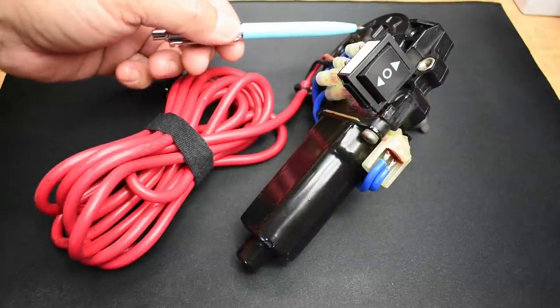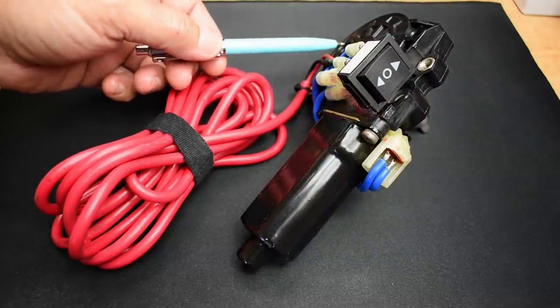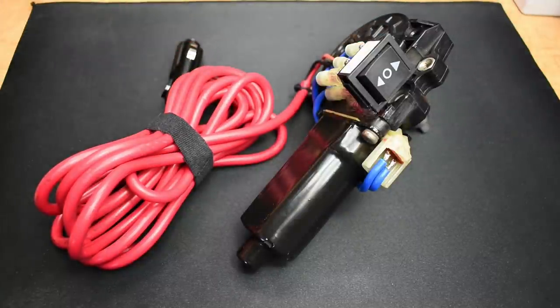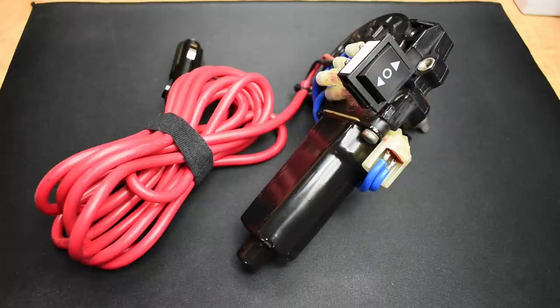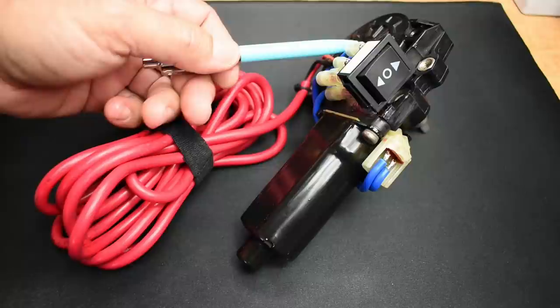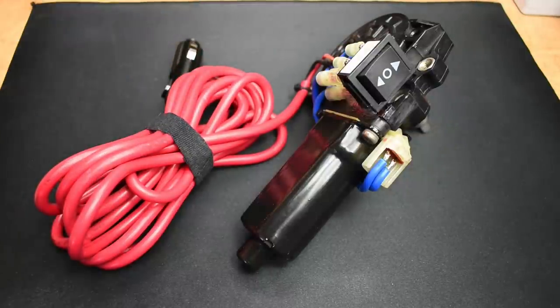The power window motor you see right here is from my Hyundai Sonata, it's a 2003. I had a problem with one of the windows closing, so it was actually cheaper for me to purchase a new regulator with the power window motor than it was to keep the power window motor and just get a regulator.